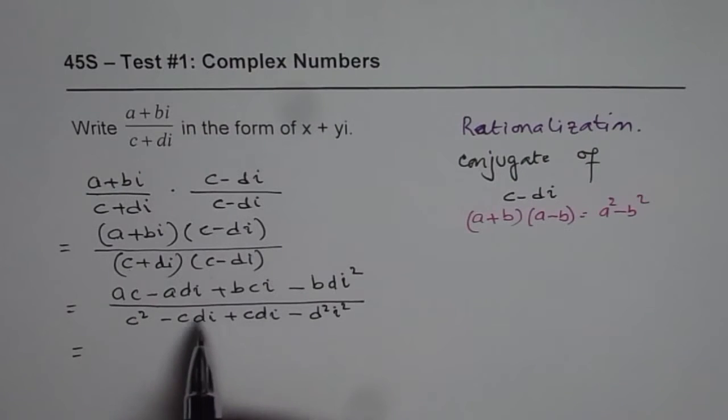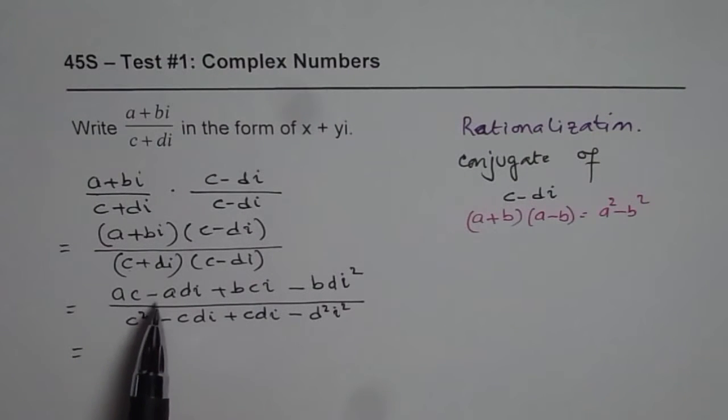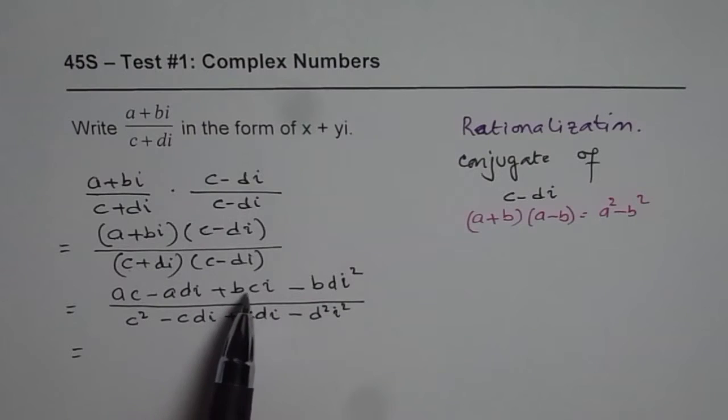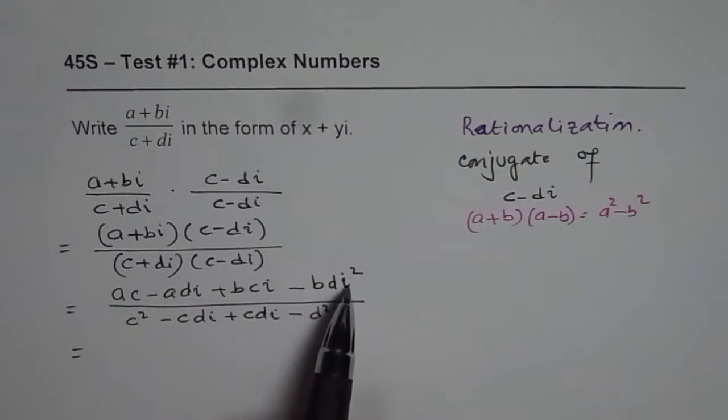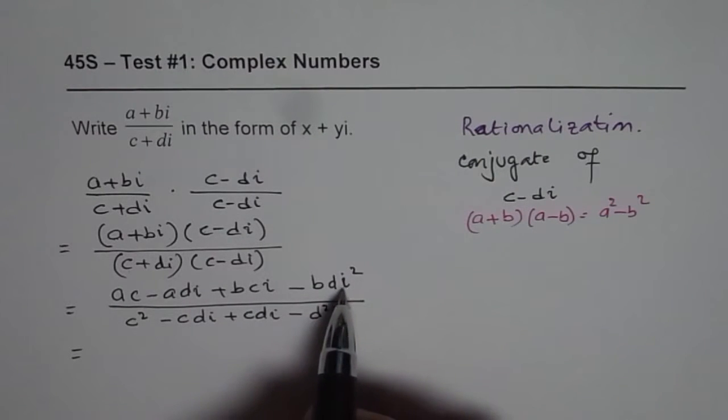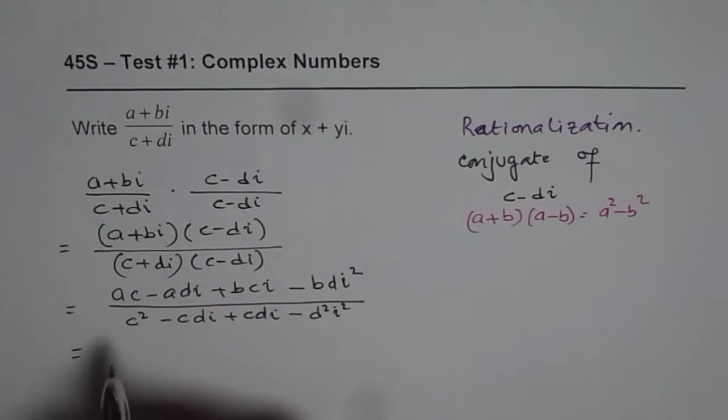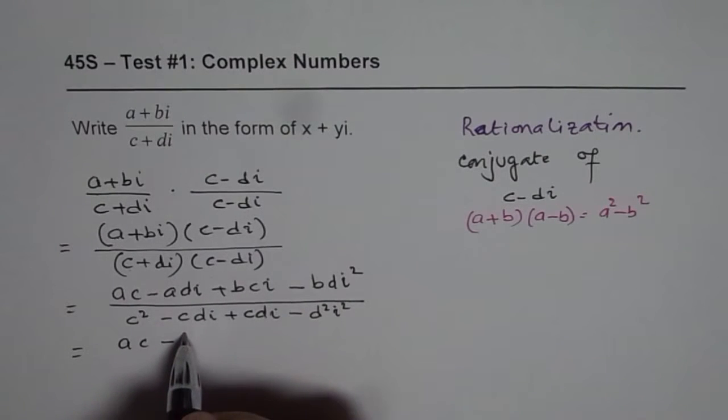Now as you can see, ac and then we have adi plus bci and bdi square. i square is minus 1. So we can write this as minus 1 and combine these terms. So we get ac minus, combine these terms.